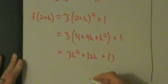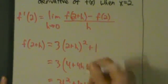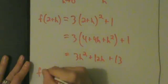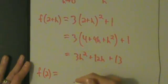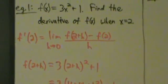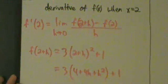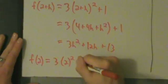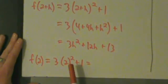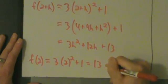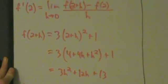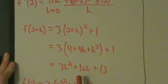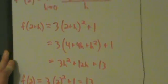Now, what's f of 2? f of 2 is 3 times 2 squared plus 1. 2 squared is 4, 4 times 3 is 12, 12 plus 1 is 13. So f of 2 plus h is 3h squared plus 12h plus 13, and f of 2 is 13.